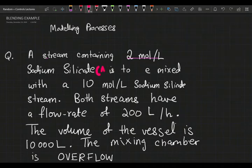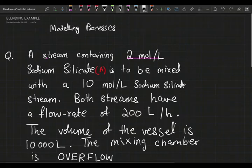Species A is to be mixed with a 10 moles per liter sodium silicate stream. So we have two streams that are being blended together—one stream is being diluted, the other one is being concentrated.